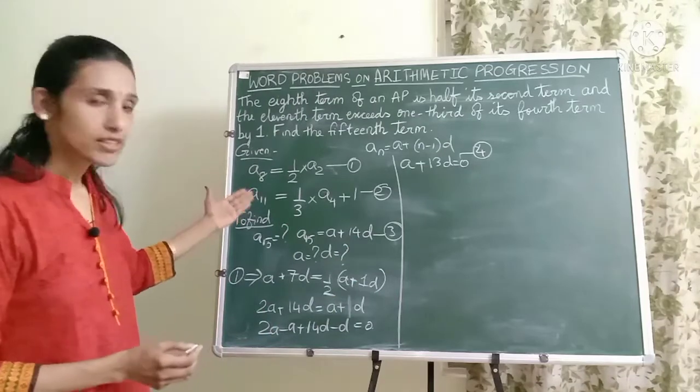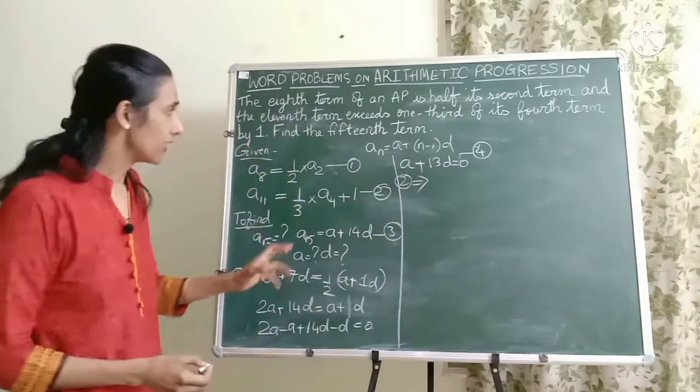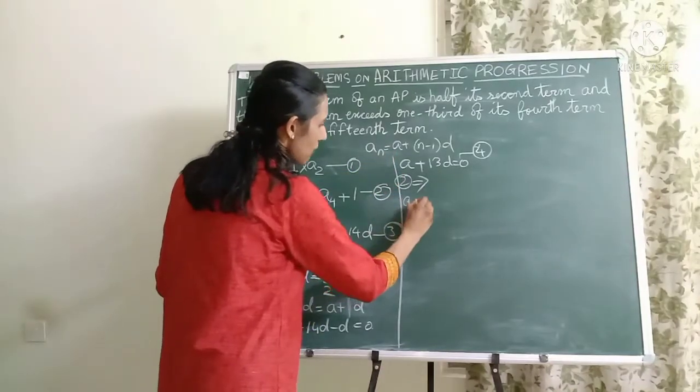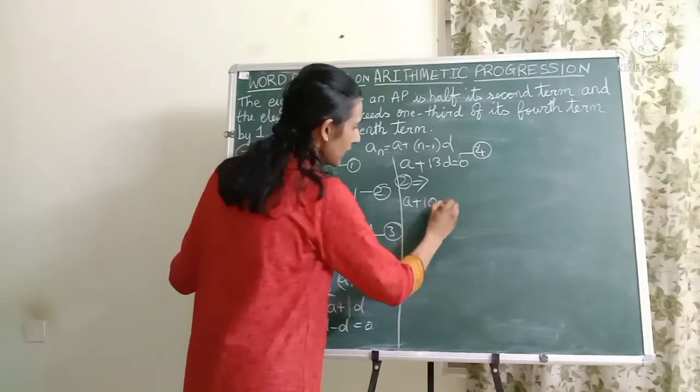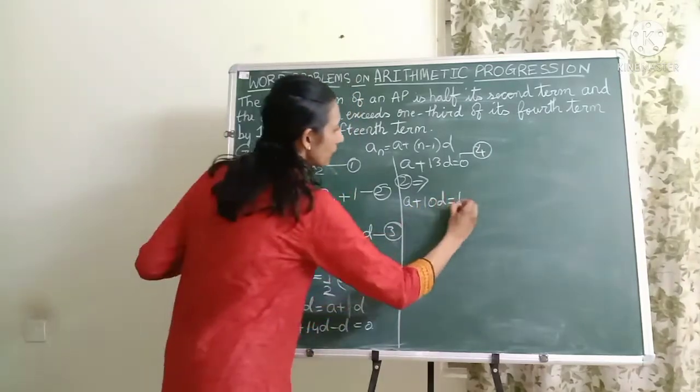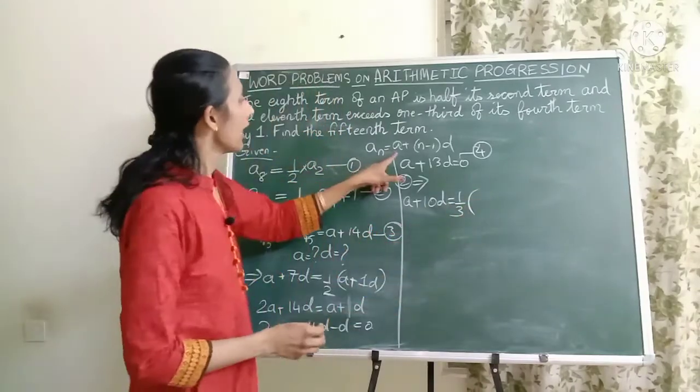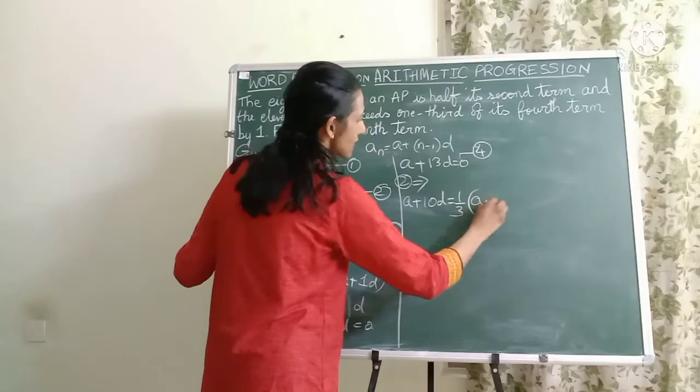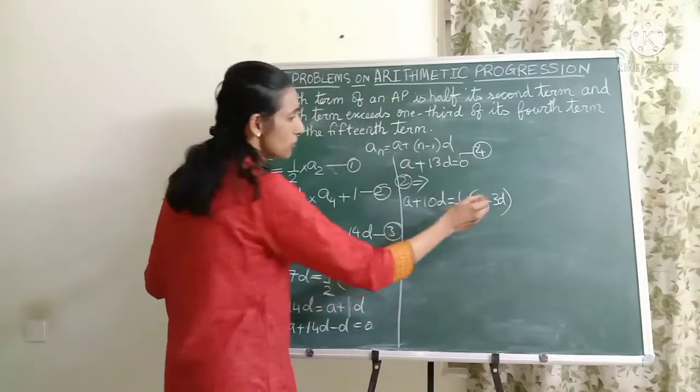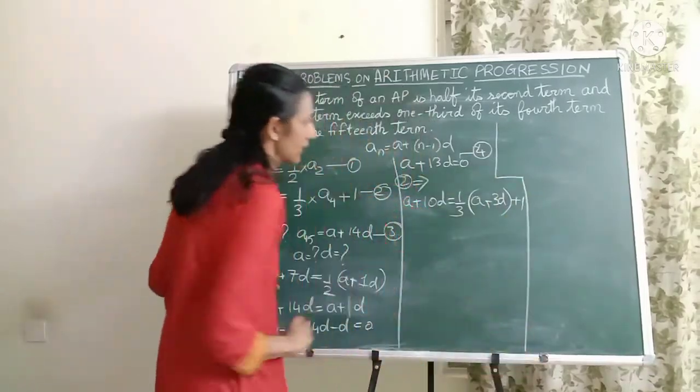Now let's quickly go to the second equation which we have here. So A11, I'll put N equal to 11. I'll get A plus 11 minus 1 which is 10D equals 1 by 3 A4. Let me put a bracket. A4 will be A plus 4 minus 1 which is 3D, close the bracket and then put a 1.